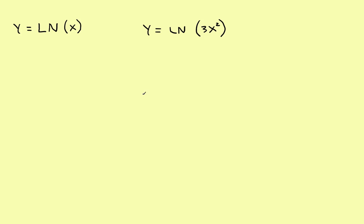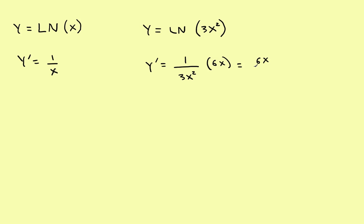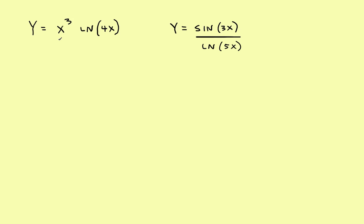The most basic example: if y equals the natural log of x, then y prime equals 1 over x, since the derivative of x is 1. For something more complicated, like the natural log of 3x squared, y prime is 1 over the argument times the derivative of the argument, which gives 1 over 3x squared times 6x. You can combine these into 6x over 3x squared, which simplifies to 2 over x.